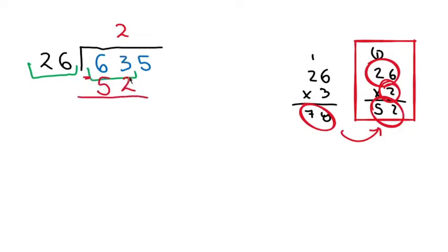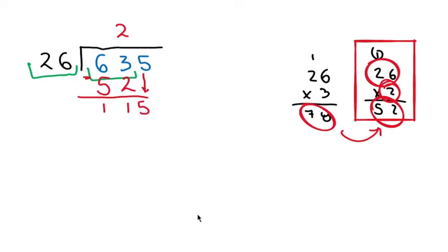26 times 2 gives me 52. Now we subtract: 3 minus 2 is 1, and 6 minus 5 is 1 — we have 11. We always bring down the next number, which is 5, so now we have 115.